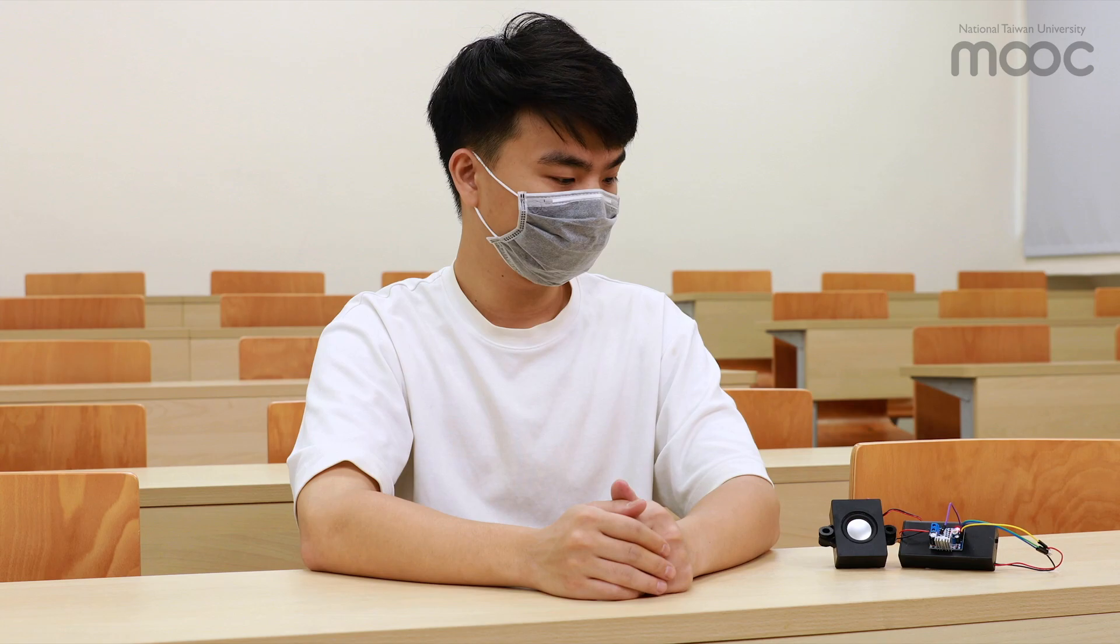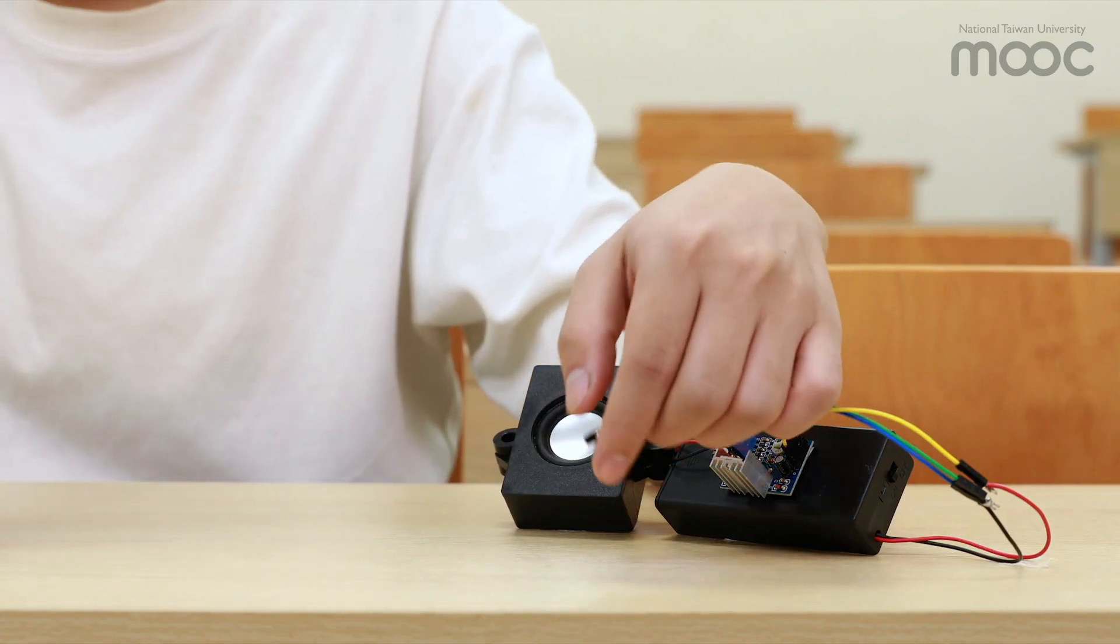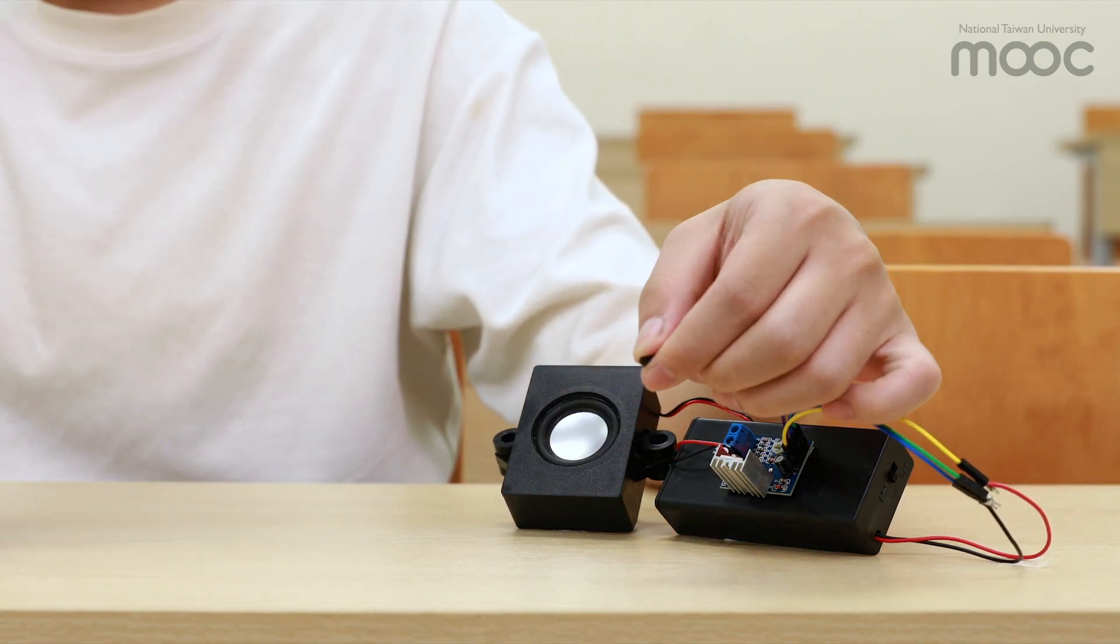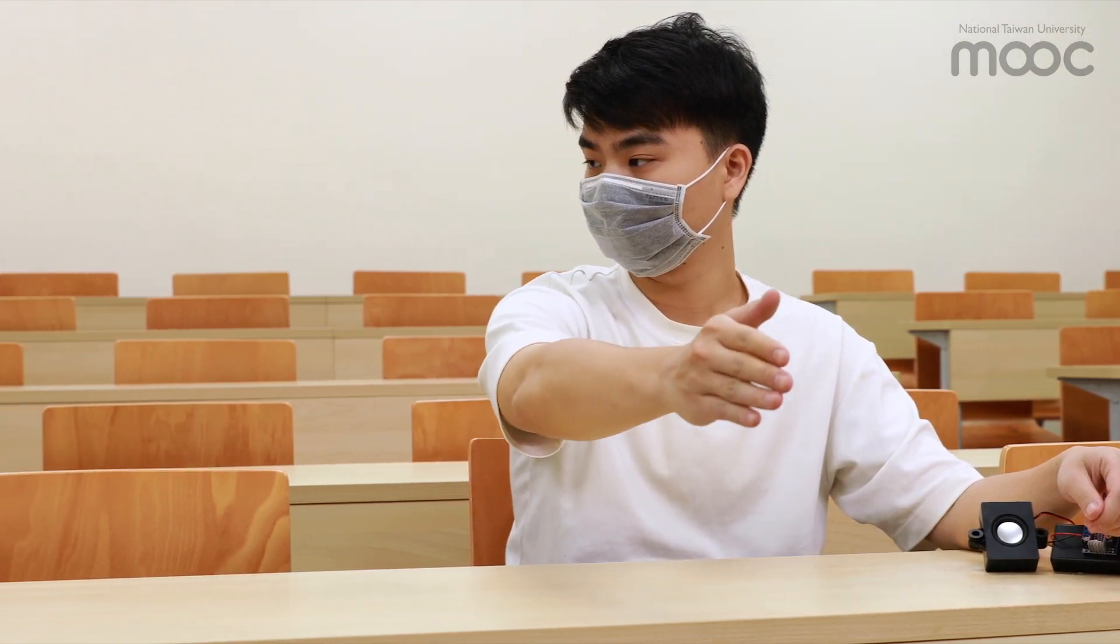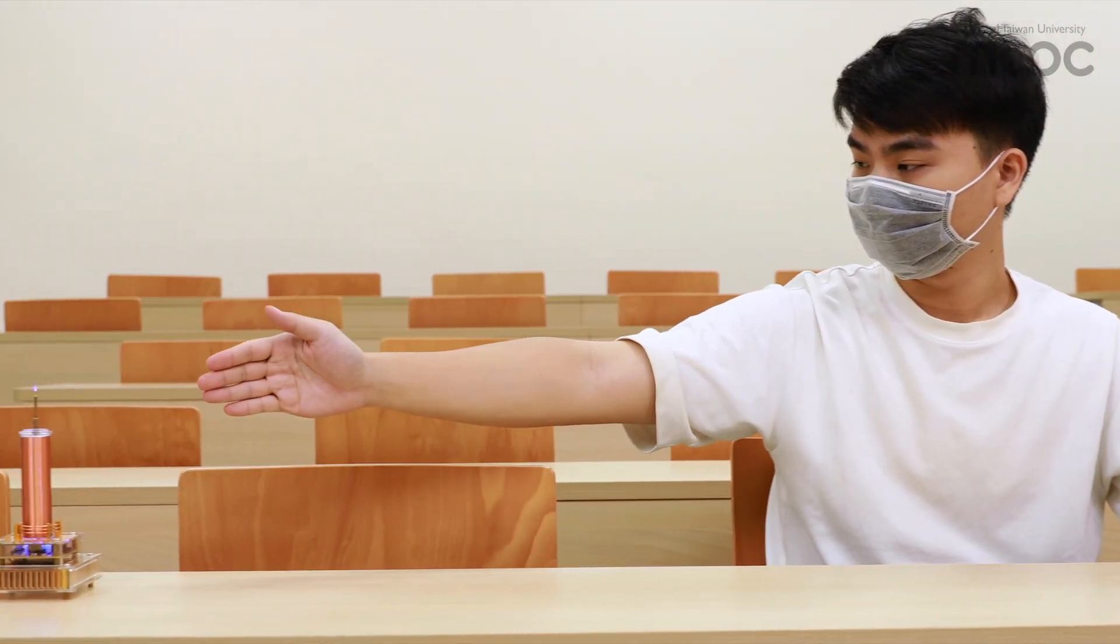Interestingly, the human body can also work as a capacitor or antenna that can receive the radio waves radiated from the Tesla coil. If the person grabs the input line of the audio amplifier with one hand while reaching with the other hand close to the Tesla coil, we can observe that the radio waves are coupled through the person and sent to the speaker.